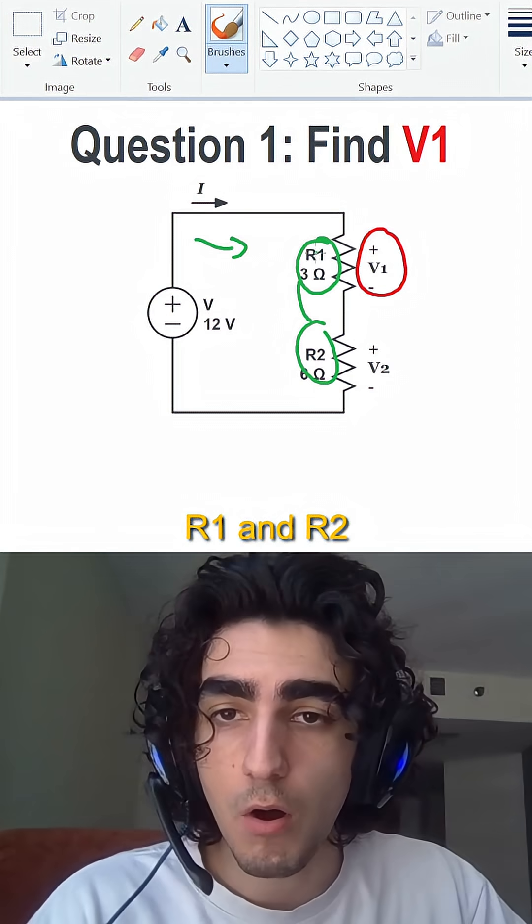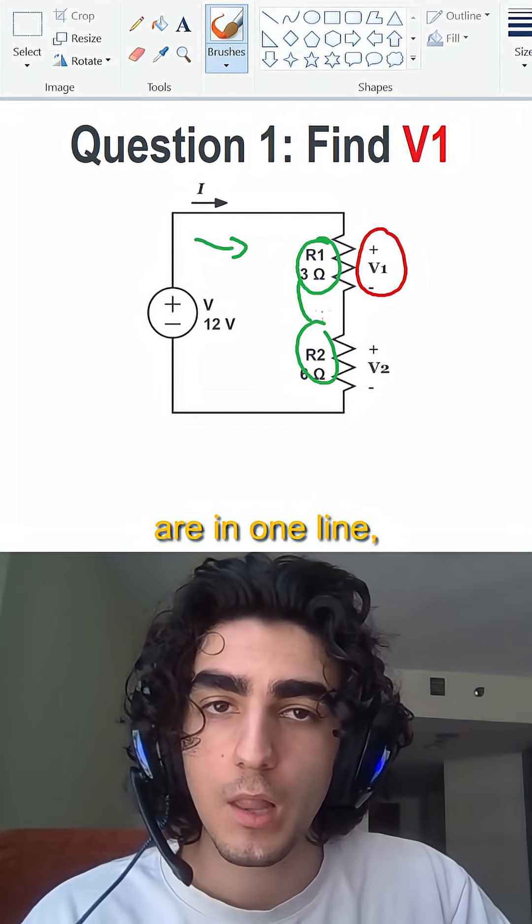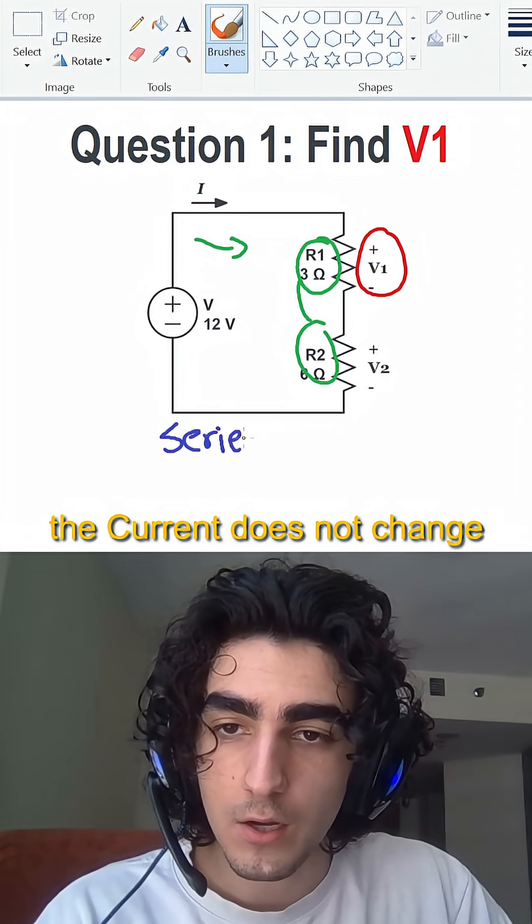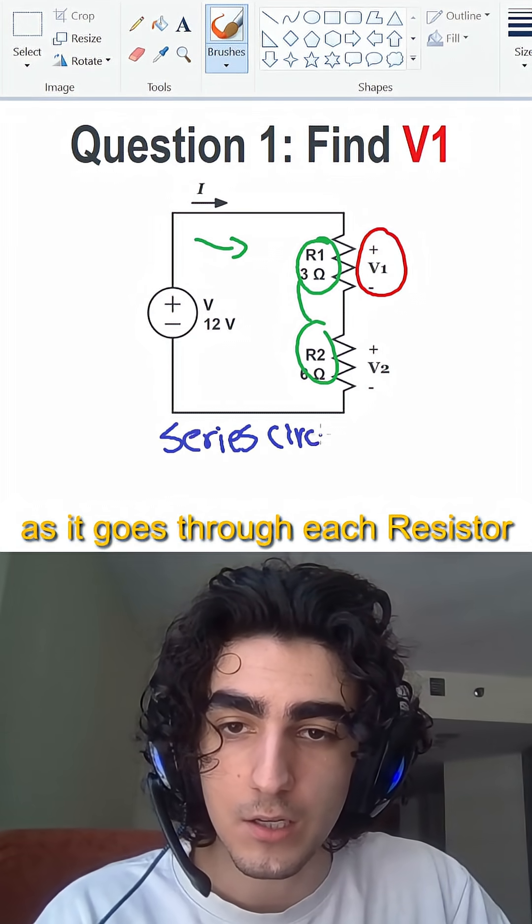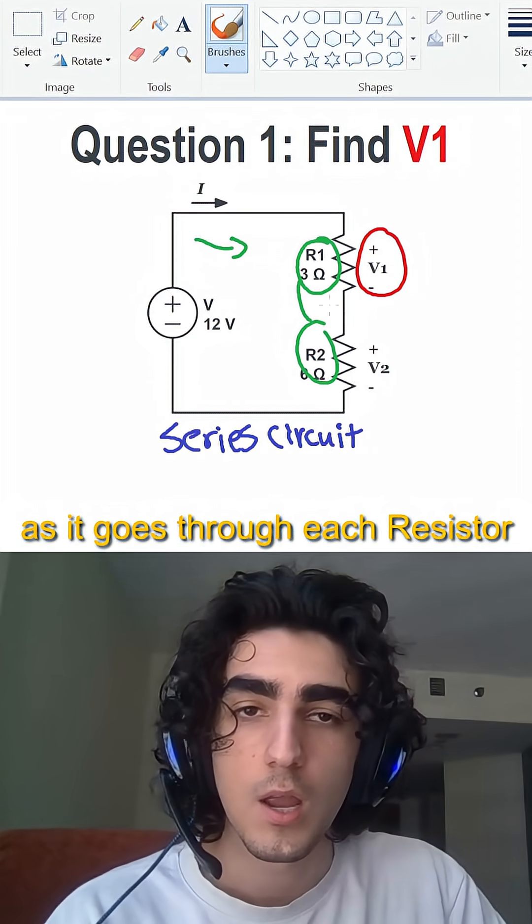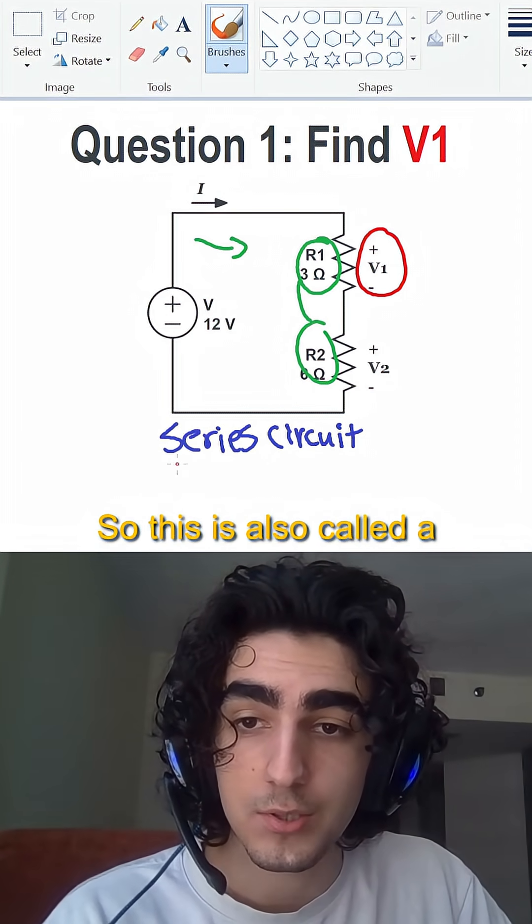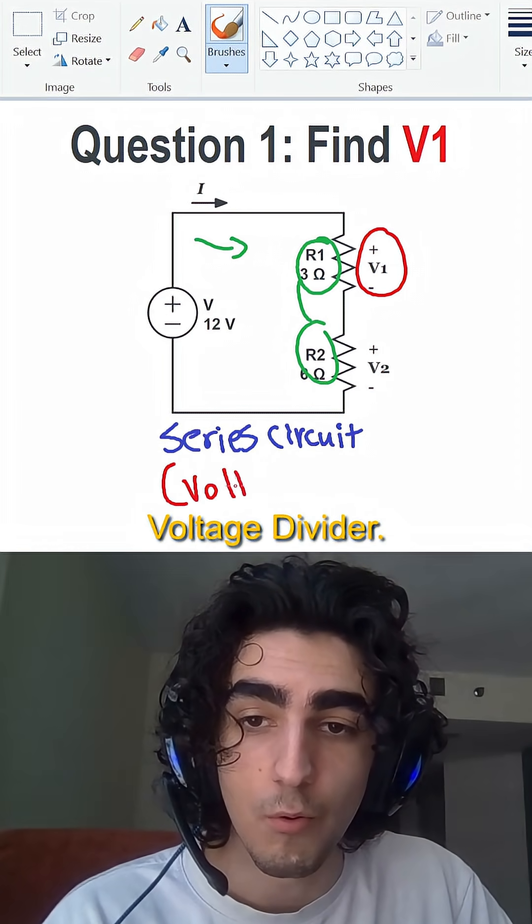Now, if we pay attention, R1 and R2 are in one line, which makes them in series, and in a series circuit, the current does not change as it goes through each resistor, but the voltage does change. The voltage actually drops, so this is also called a voltage divider.